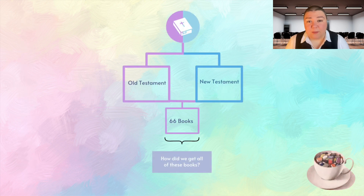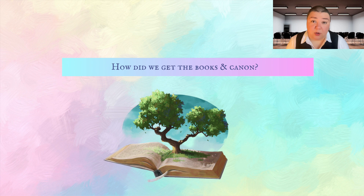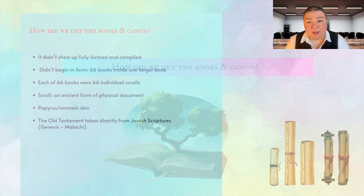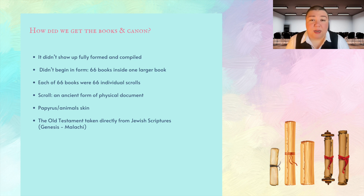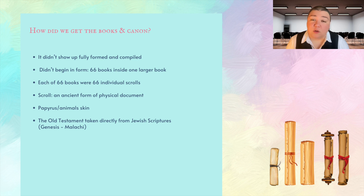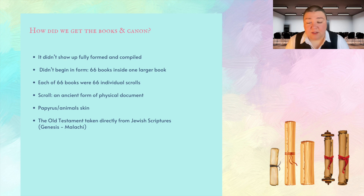We have this book called the Bible, and inside it are all these smaller books. The Christian Bible as we know it didn't just show up fully formed and compiled one day — 66 books inside one larger book. Each of these 66 books were at one time, more or less, 66 individual documents or scrolls. Esther was one scroll, Psalms was one scroll, and so on. Scrolls were an ancient form of physical document — instead of a book with pages you can turn, a scroll would be a one-line piece of papyrus, a type of paper, or animal skin, that you would roll up similar to an architect's drawings.